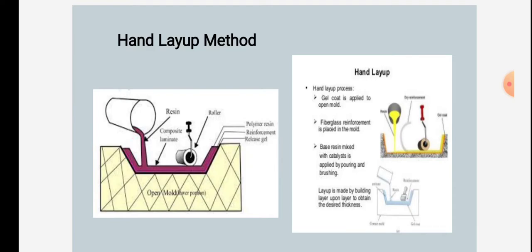Base resin mixed with catalyst is applied by pouring and brushing. Layup is made by building layer upon layer to obtain the desired thickness.